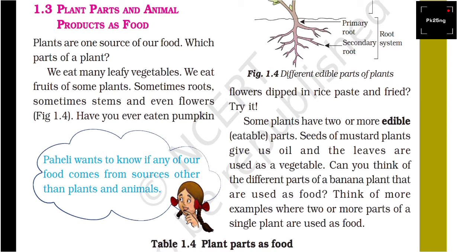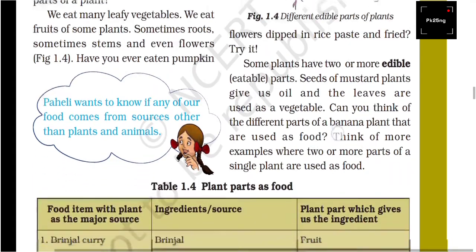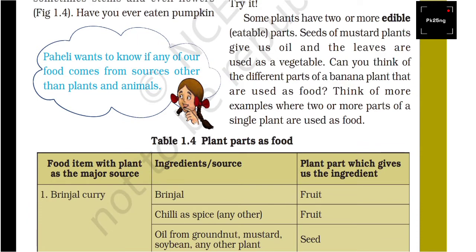Seeds of the mustard plant give us oil, and the leaves are used as a vegetable. Can you think of the different parts of the banana plant where two or more parts of a single plant are used as food?